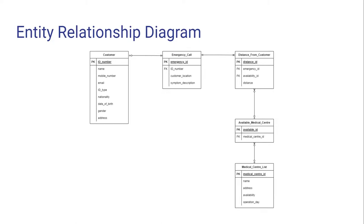The distance from customer entity takes distance ID as primary key, emergency ID from the emergency call entity, and available ID from the available medical center entity as foreign key, plus a distance attribute.